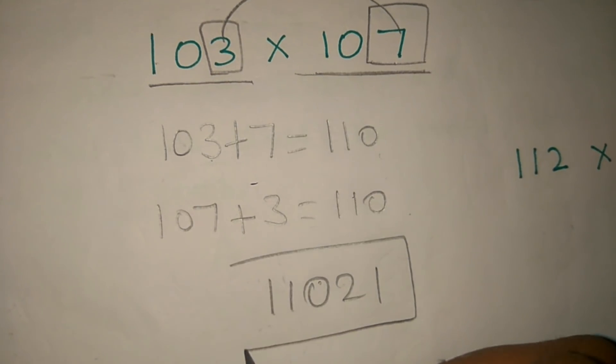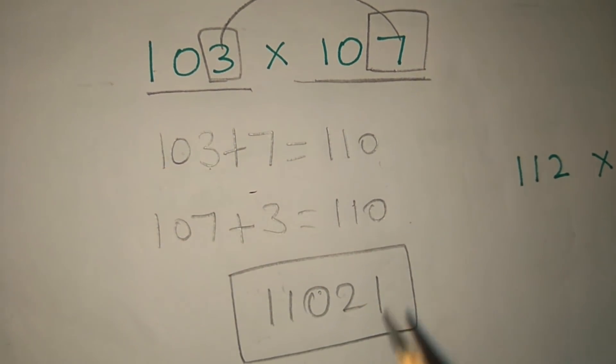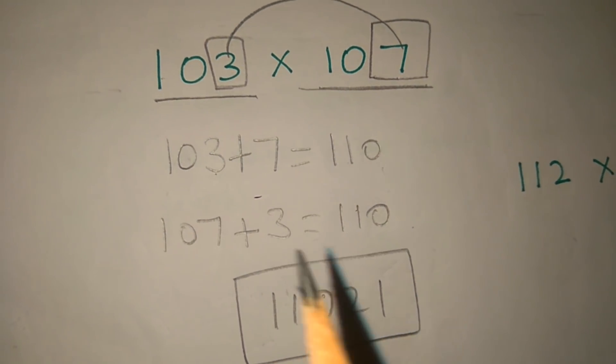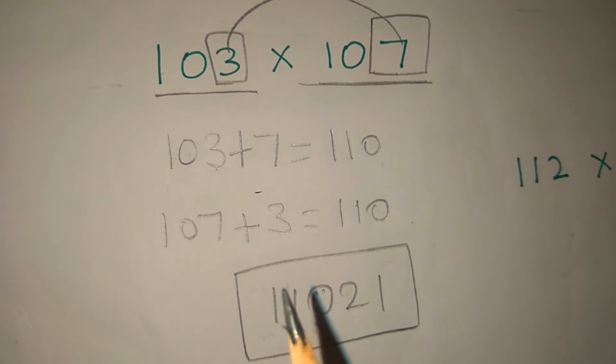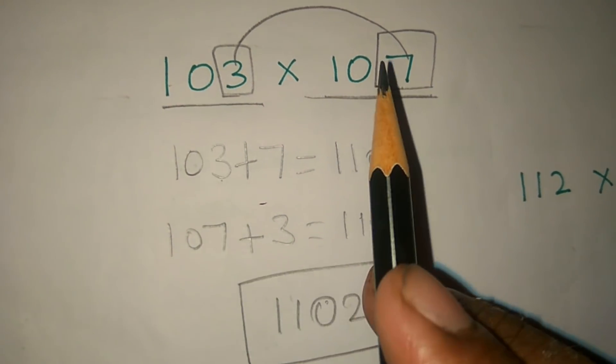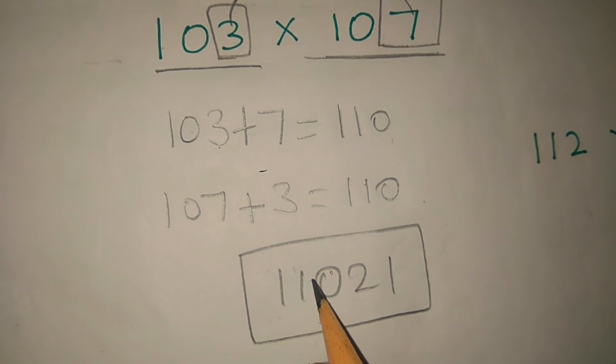So the answer, 103 x 107 is 11021. So if we can see it, we can use the pattern, just add 110 x 3 x 7, 21. OK, let's do this.